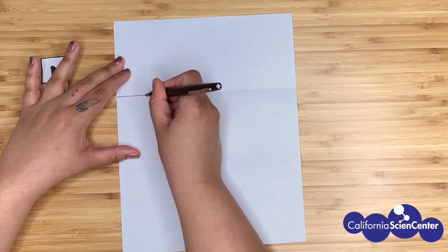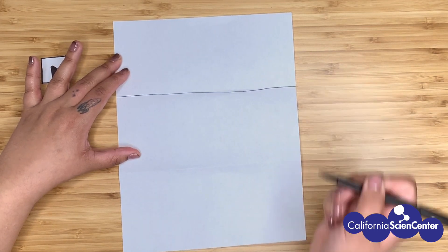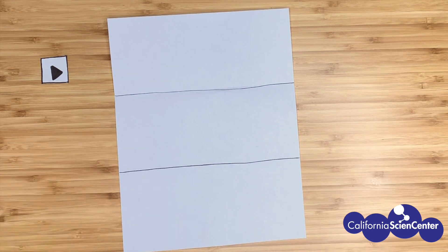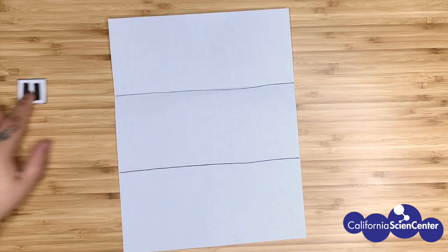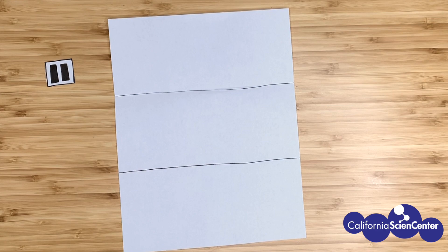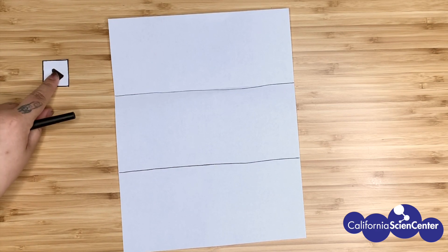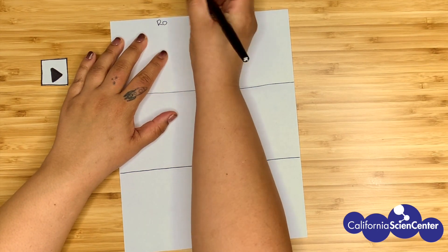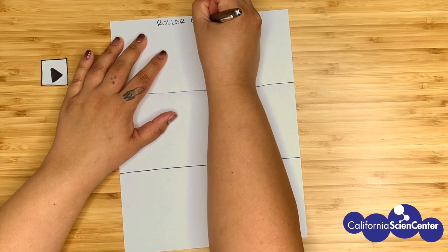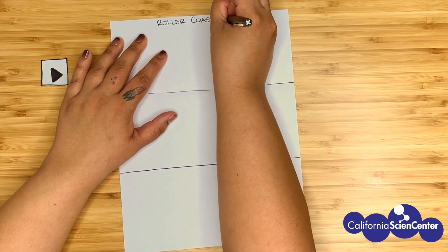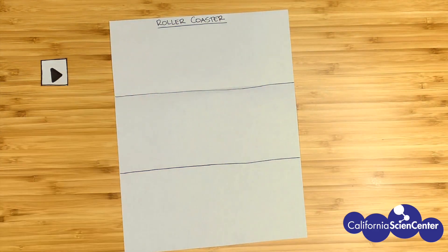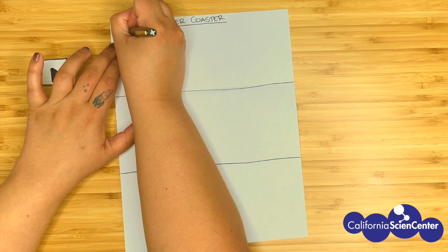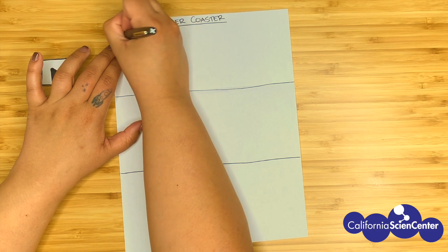Let's add a title. This week's theme is build it! And you've been using the engineering design process to build. So today I thought we'd build a roller coaster. We will start with our first prototype, test one.